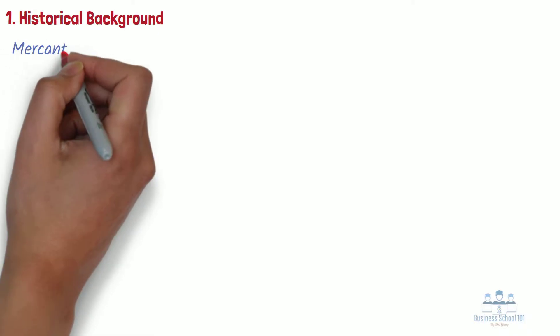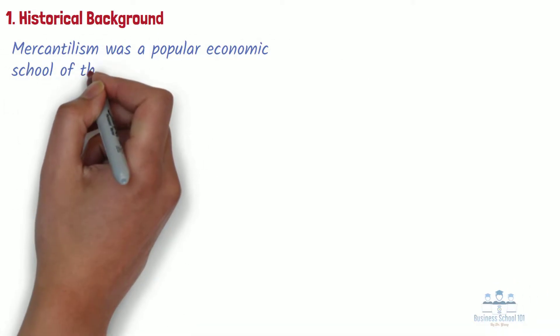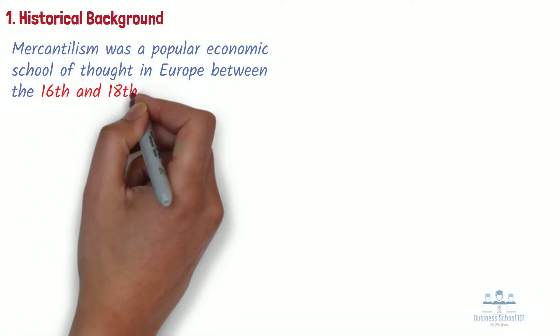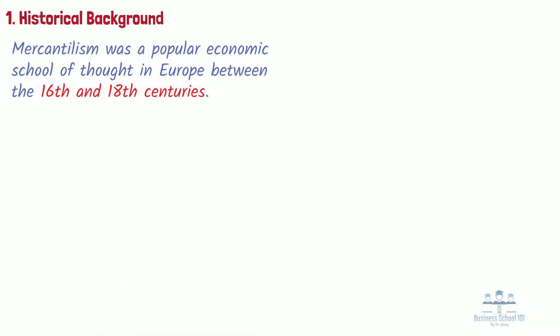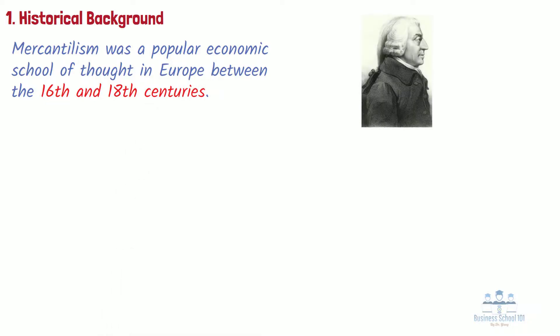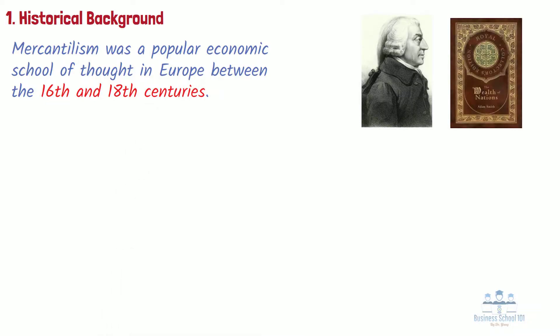Section 1: Historical Background. Mercantilism was a popular economic school of thought in Europe between the 16th and 18th centuries, but it wasn't officially named until Adam Smith released his book The Wealth of Nations in 1776. He highlighted how European powers aimed to restrict imports whilst actively encouraging exports. The aim was to bring gold and silver into the country and thereby stimulate domestic employment.